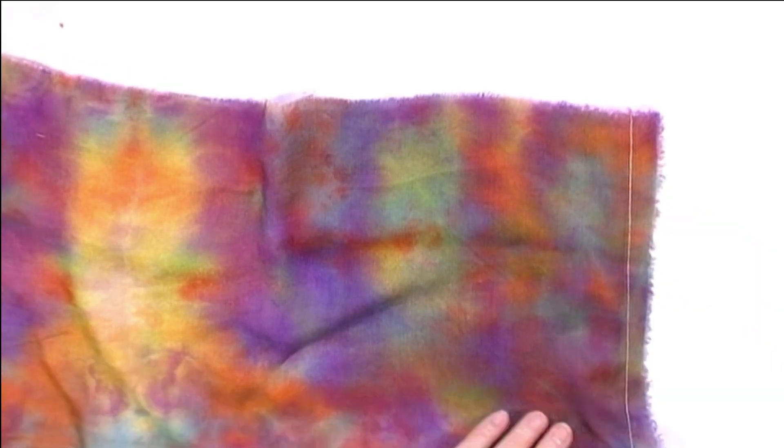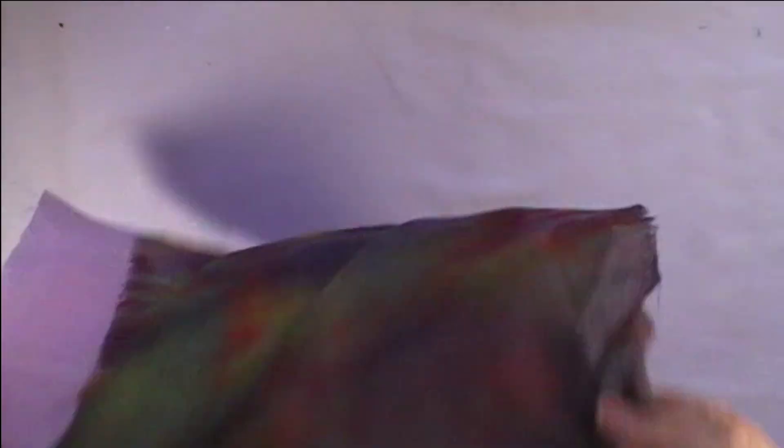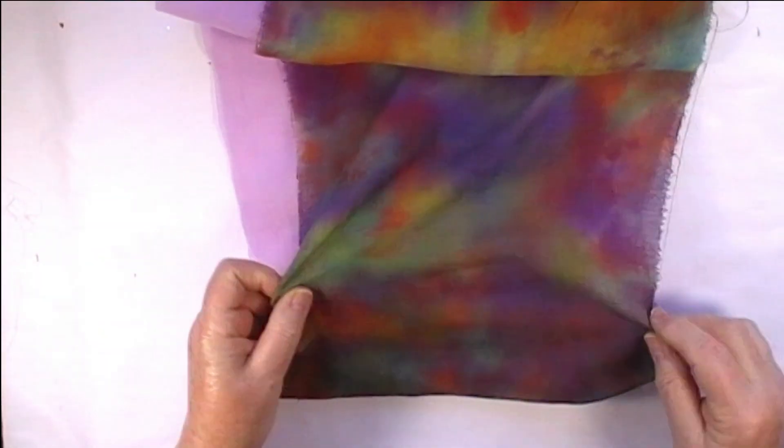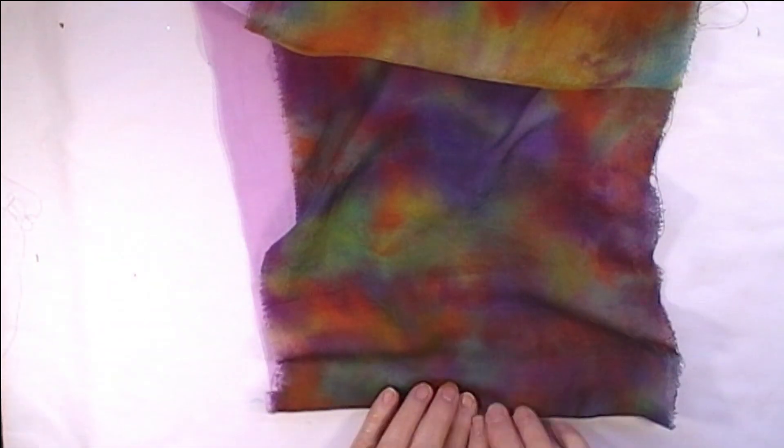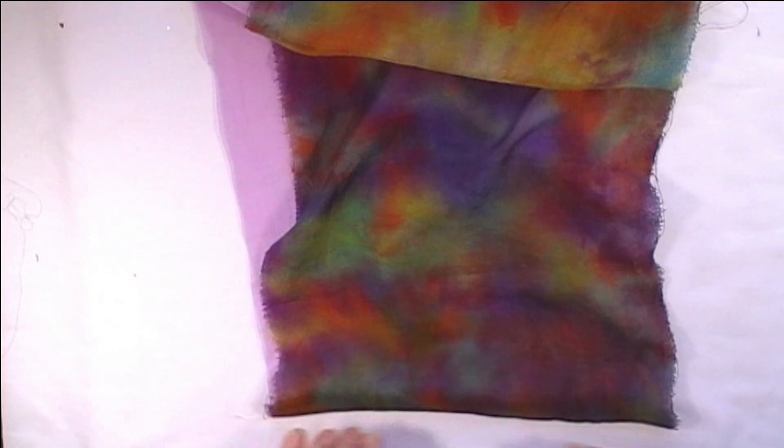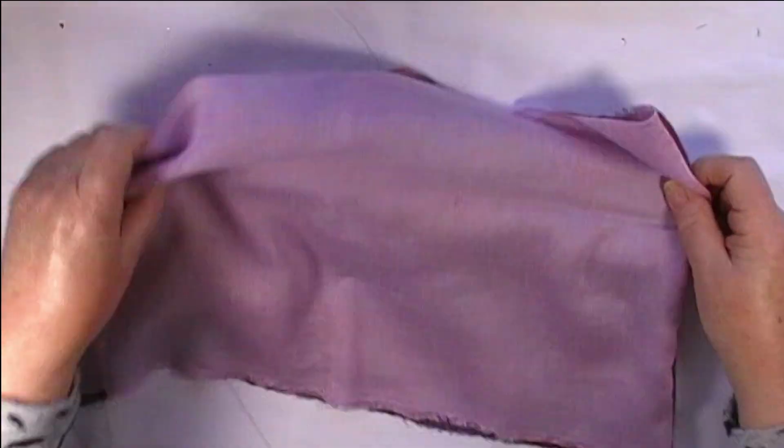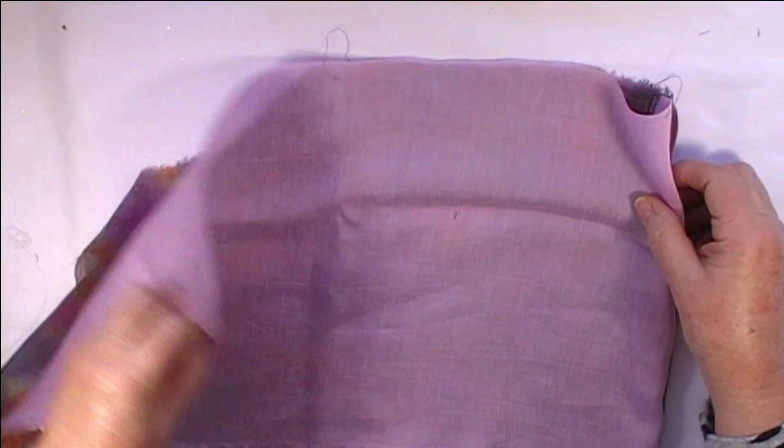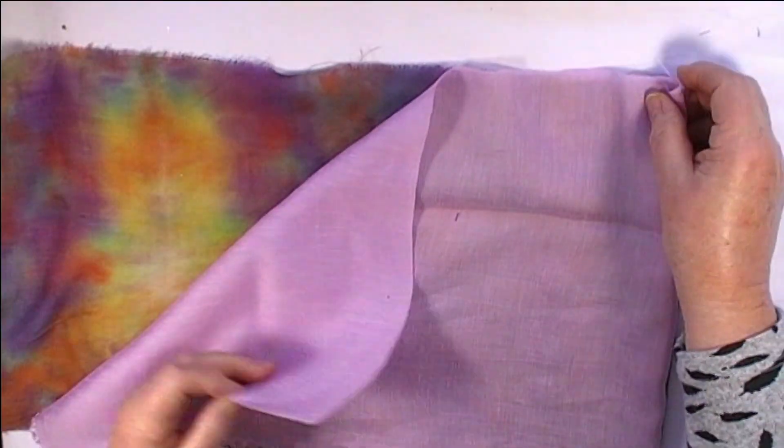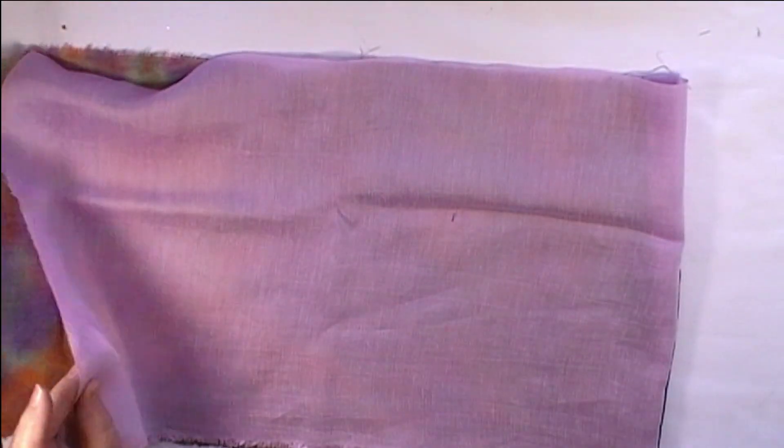Okay I've got a seam across there. Now as I say it's all in the folding so I'm going to just turn it inside out and I'm going to press on that seam there. If you've got an iron it's probably better but I'm just going to do it with my fingers.